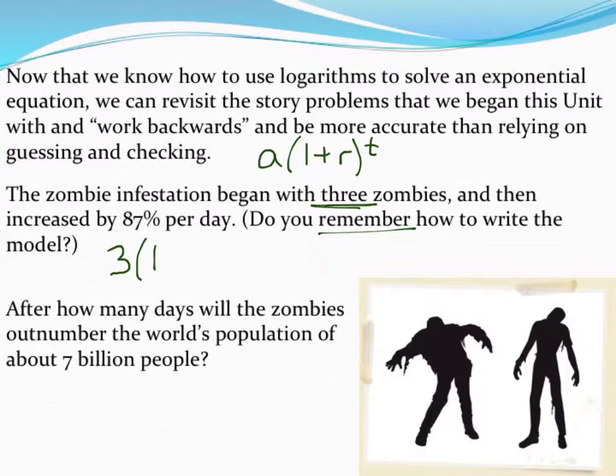We started at 100%. From there, it increased by 87%, so 0.87, and then raised to the t, because we don't know how many days this is going to take. So there's my model that I want to use to figure out when the zombie population will reach 7 billion.